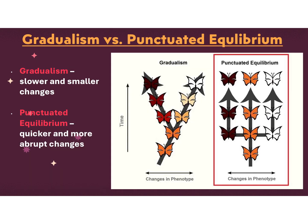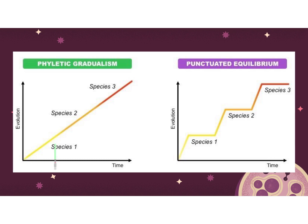Equilibrium can be what we call gradualism or punctuated. Gradualism is slow, smaller changes over time that are more straight-lined — one species disappears and a new species takes over, gradually. Punctuated equilibrium shows a stair-step pattern where you get quicker, rapid episodes of evolution and then periods of stability — equilibrium — followed by more quick evolution. We're finding more and more that evolution is more a punctuated equilibrium situation than gradual, based on how environments change.